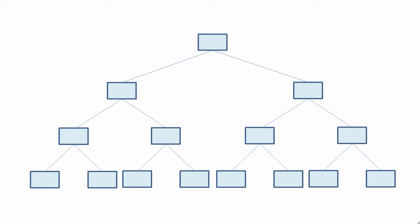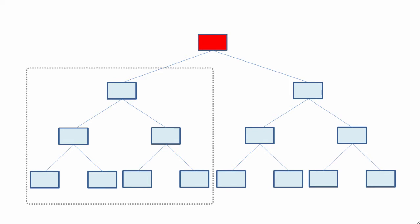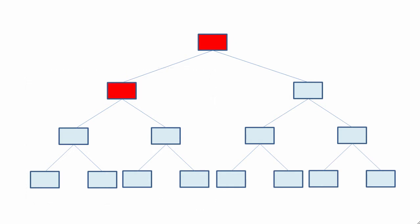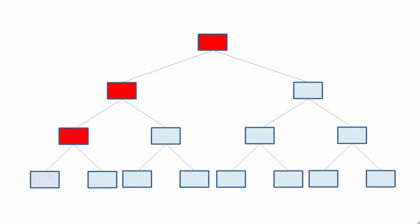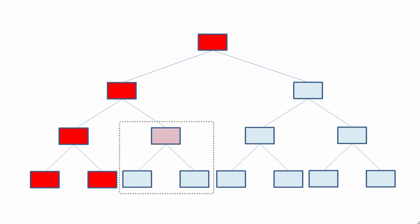With pre-order traversal, first we visit the root. Then we examine the left subtree, starting with the root, and then we examine its left subtree, starting with the root — then the left, then the right. Now we can examine the right subtree of this root: starting with the root, then the left, then the right.